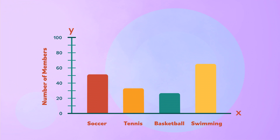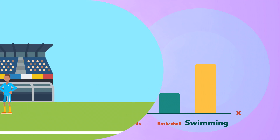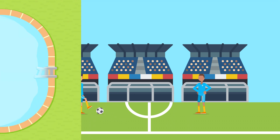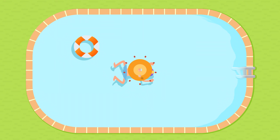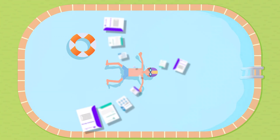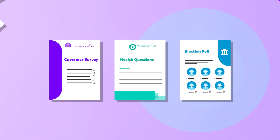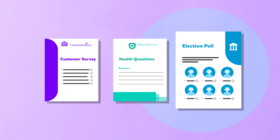From this graph, we can see that most of the members enjoy swimming and soccer. This information can help the club to make decisions, like whether to build a new soccer field or swimming pool. They might have heard random requests from different members, but a survey ensures that everyone has an opportunity to share their opinion, making the final decision more fair.